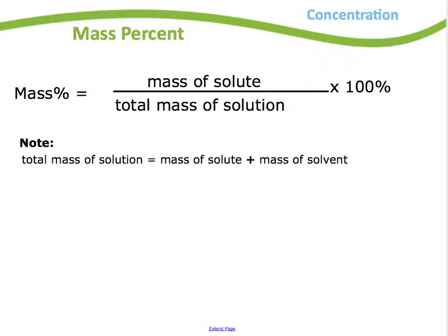The first one, maybe the easiest one to talk about, is looking at concentration in terms of mass percent. Basically, what the mass percent is asking or describing is what mass of solute is there compared with the total mass of a solution. Remember that the total mass of solution includes both the solute and the solvent that you're dissolving it into.